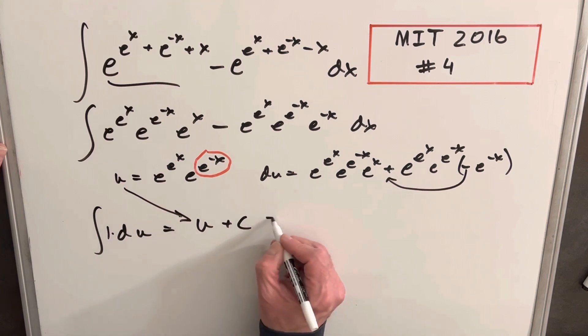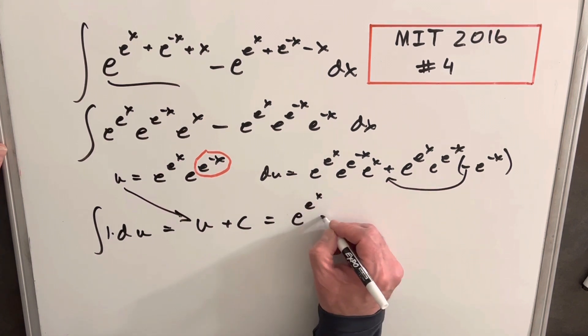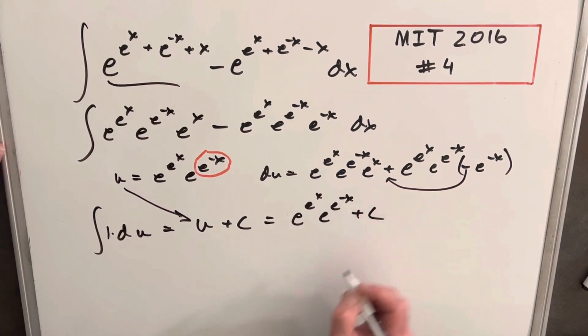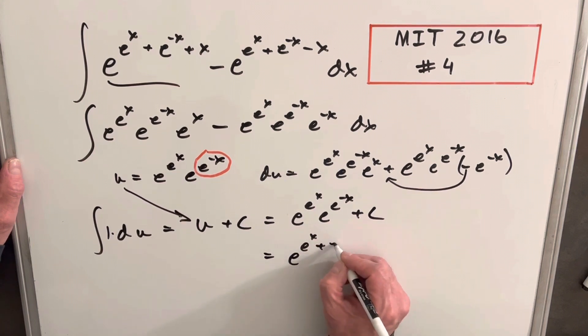We'll back substitute it here, and we have e to the e to the x times e to the e to the minus x plus c. But I think what I'll do, just to be polite, we'll write it the way they had it originally.